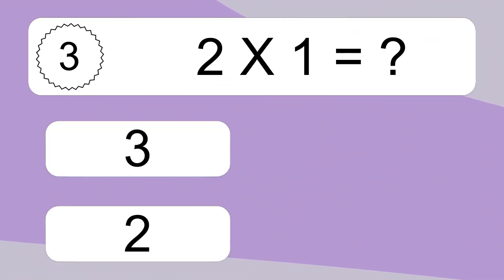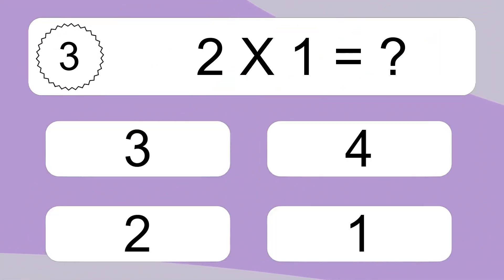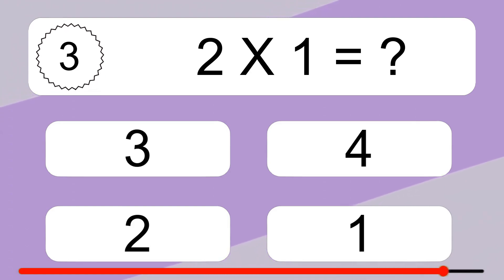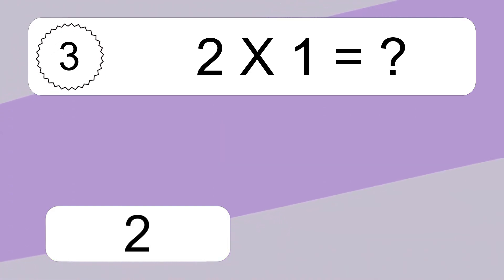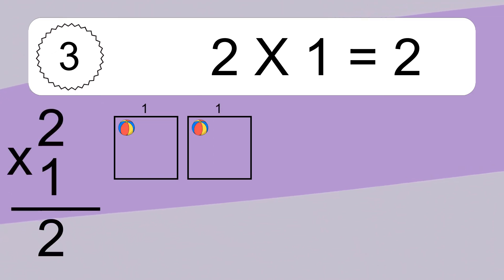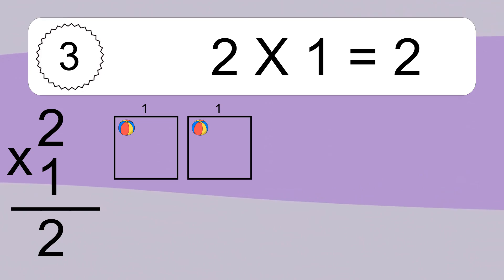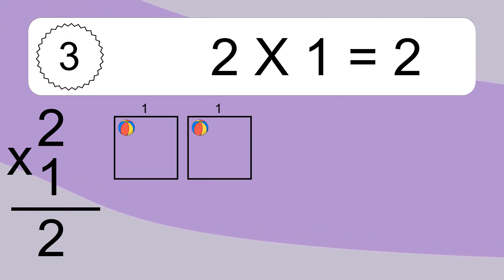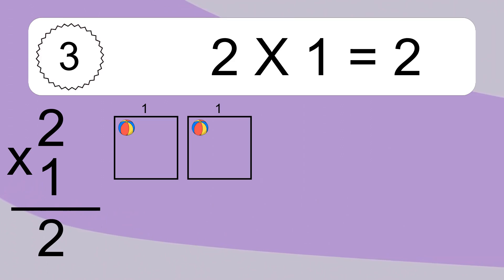2 times 1 equals what? 2 times 1 equals 2. We have 2 boxes, and each box has 1 colorful ball inside. If you count all the balls in all the boxes together, you will have 2 times 1 balls. This equals 2 balls.